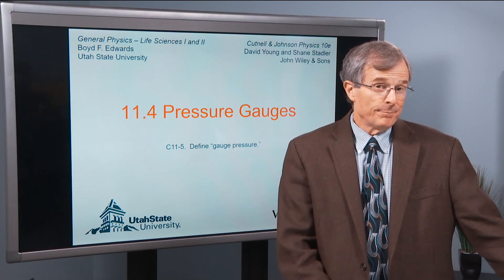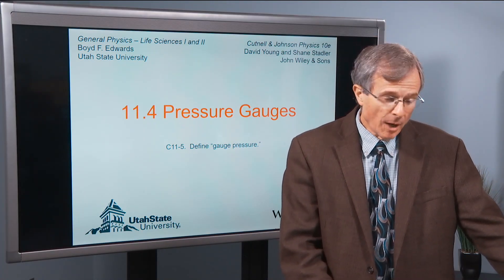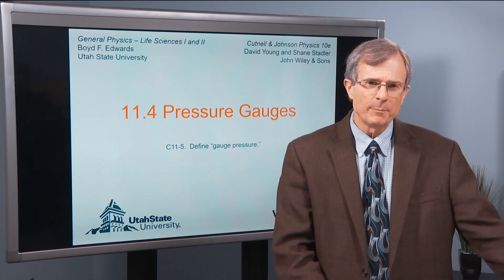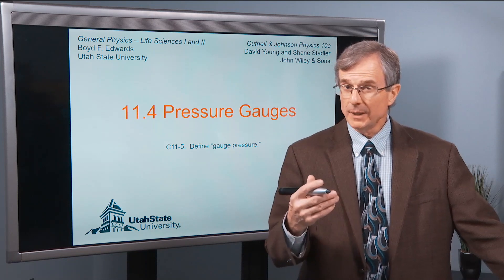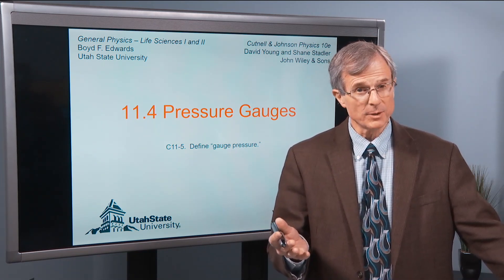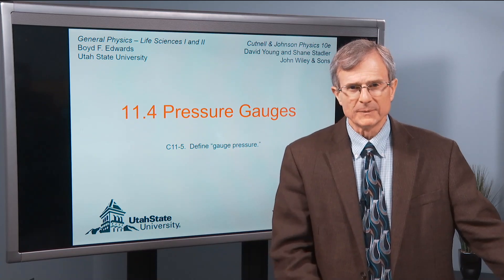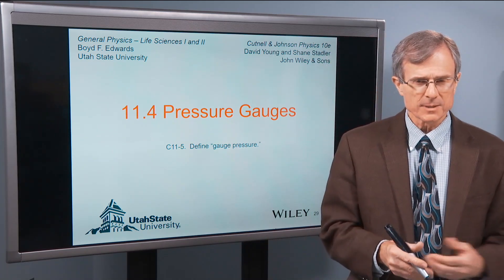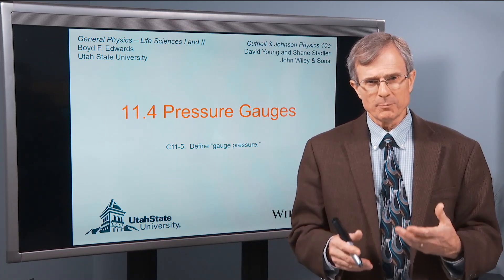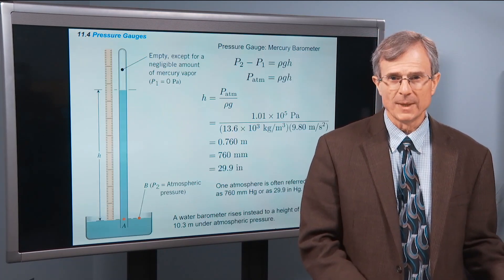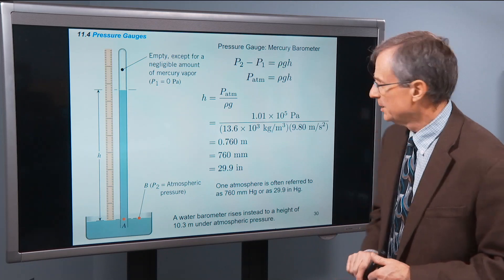If you've ever put air into your tires of your car, then what you've used is a pressure gauge, and it measures what's called the gauge pressure. It doesn't measure the absolute pressure. Also, your blood pressure, like in the demo that we did in the last section, that pressure is actually a gauge pressure. What's the distinction? We will teach you that now.